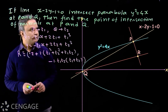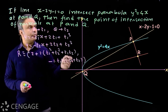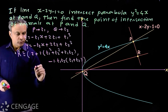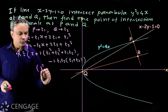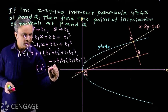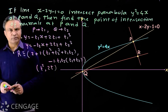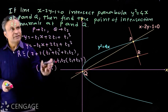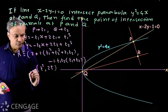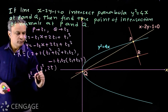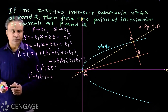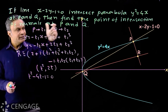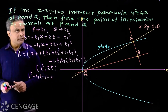Now we solve the line and parabola by putting the coordinates of the variable point on the parabola into the equation of the line. The variable point on the parabola is (t², 2t) with a = 1. Substituting into the line equation gives: t² − 4t − 1 = 0.